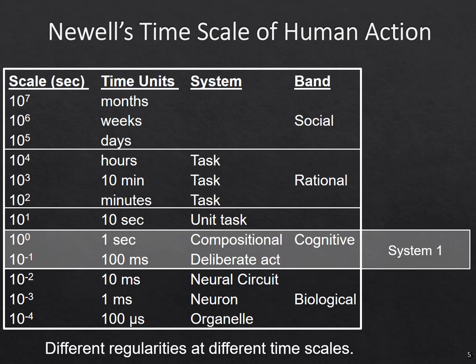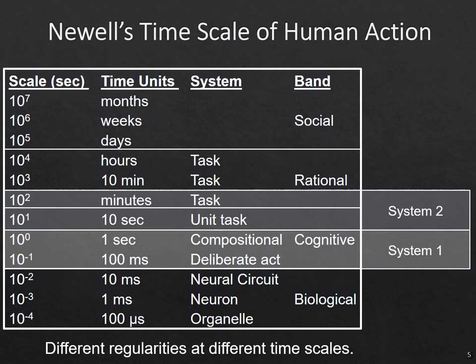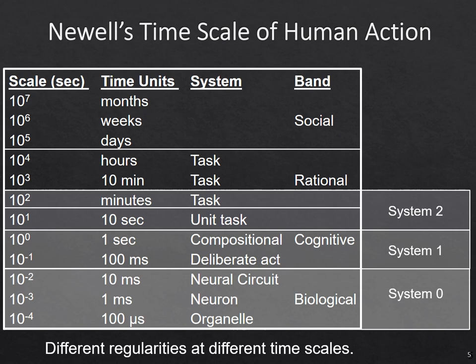If we map this onto Kahneman's levels of behavior, his System 1 and System 2, somewhere between a tenth of a second and a second is where System 1 happens — behavior that occurs very quickly without a lot of deliberation. When we get up to the unit task, where there's time for many simple deliberative acts to be composed together, we start getting the more rational behavior of System 2. I also like to identify System 0, which is the underlying implementation — in humans, these are neural circuits and neurons.